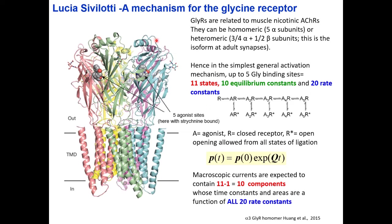In the simplest general activation mechanism, the simple mechanism is actually quite complex. It contains six shut states. The receptor unbound binds one agonist molecule, then it can open with a low probability, then it binds another agonist molecule and so on. So you can have six shut states and five open states, giving 20 rate constants and 10 equilibrium constants.